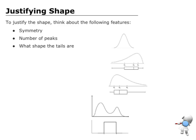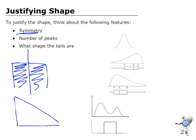In terms of justifying it, we need to think of three different ideas: symmetry, number of peaks, and what shape the tails are. Now symmetry - if I take for example a rectangle or a square, I draw a mirror line down the middle of it, I should be able to get that this half is a mirror image of that half. If I was to draw a triangle like this, put a mirror line down the middle, you can see that this left hand side is a different shape and size to the right hand. So this is not symmetric, whereas this is.